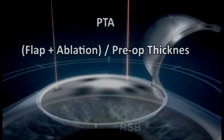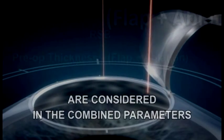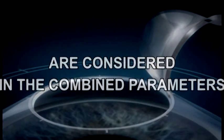Percentage tissue altered and residual stromal bed thickness, both representing the impact from surgery, are considered in the combined parameters and decision tree approaches. The consensus inclusion of parameters was demonstrated to improve accuracy.